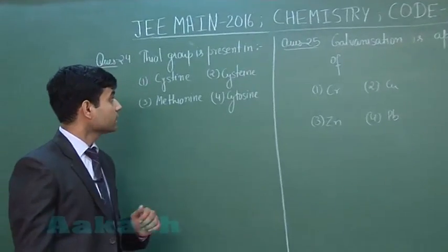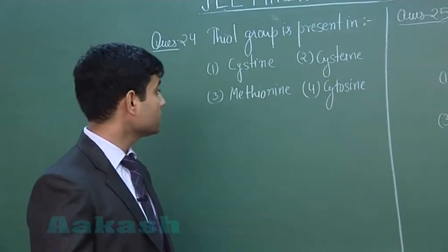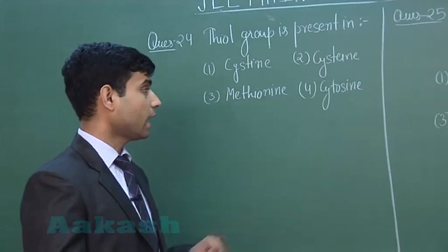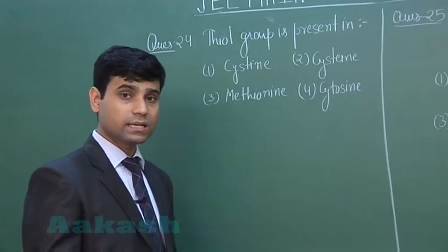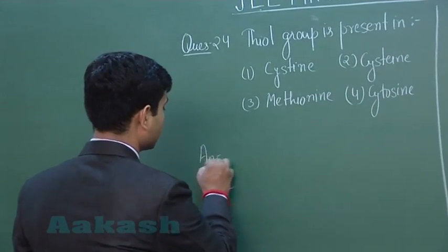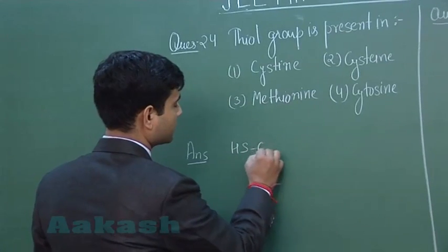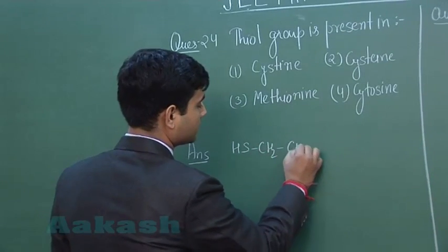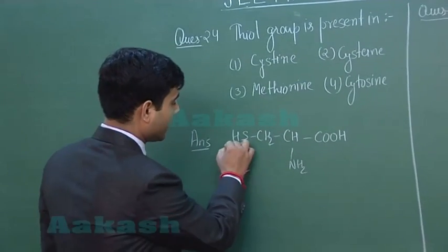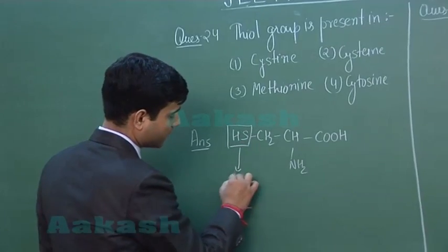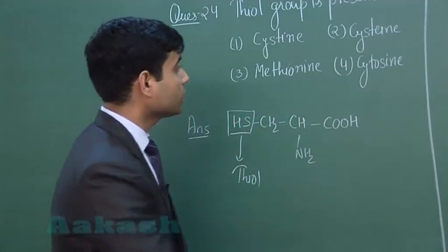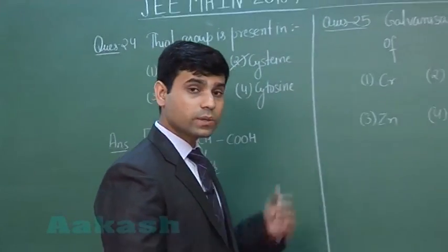The next question: thiol group is present in which of the following — cysteine, methionine, or cytosine? These are alpha amino acids. In the case of cysteine, the structure is SH-CH₂-CH(NH₂)-COOH. Cysteine has the SH group which is the thiol group, so the correct answer is option two, cysteine.